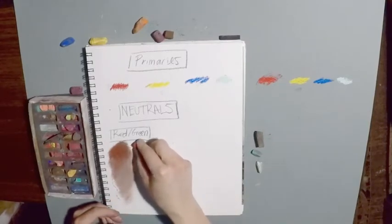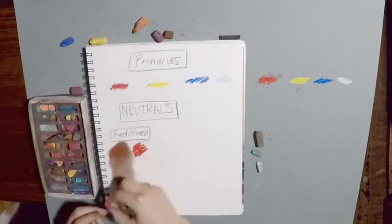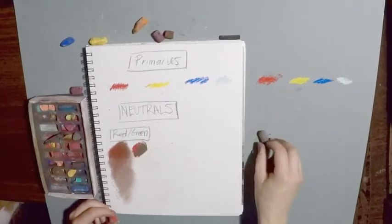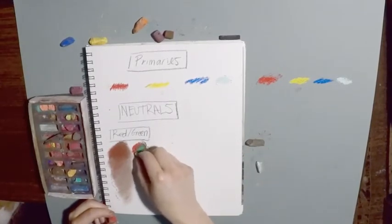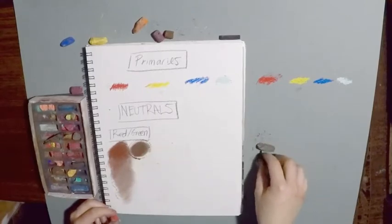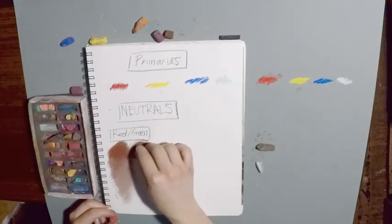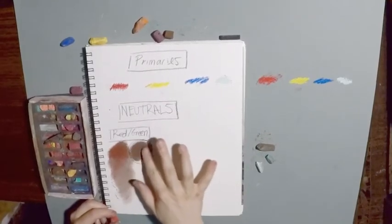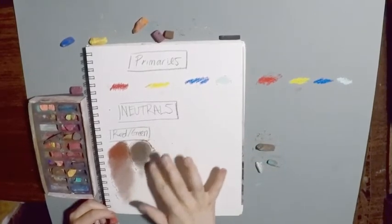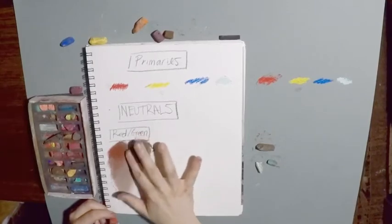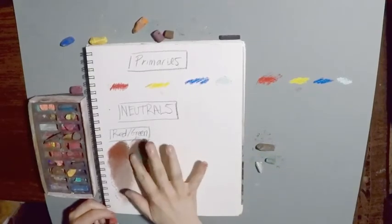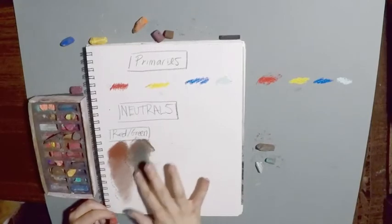Now we'll do one where we push it a little bit more towards green. I put some red down and I'm going to add more of my green — more of my cool color — into this version of the neutral. So now I've made another version of this neutral using the same colors, but just adding more of my cool color — in this case the green — and it creates a different type of effect.